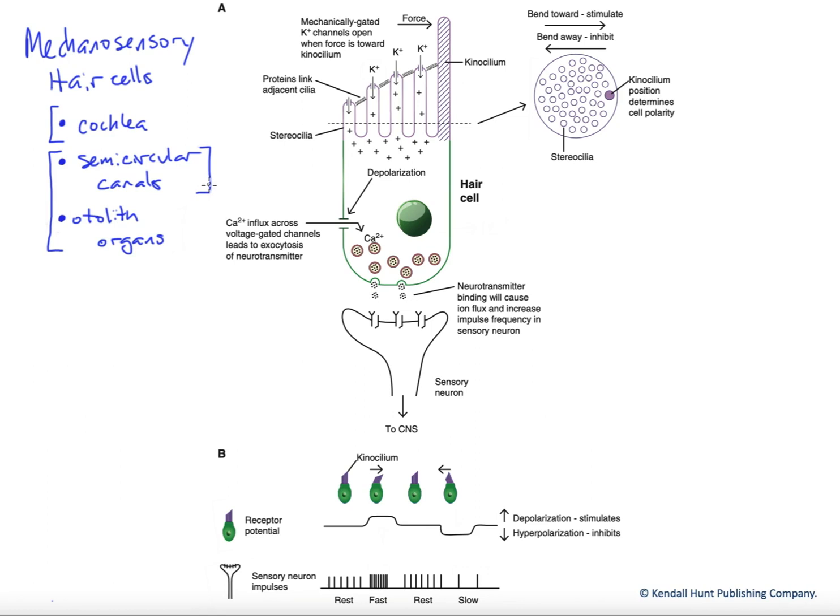The semicircular canals sense the position and movement of our head in space, providing information about movement in three planes, while the otolith organs provide information about acceleration as well as position of our head relative to gravity, or in other words, essentially tilt of our head.